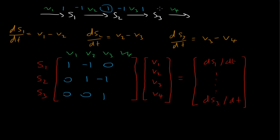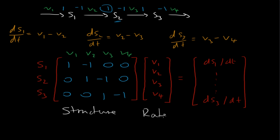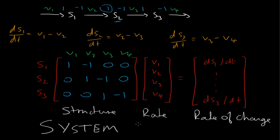Finally for V4, S1 is not involved so that's 0, S2 is not involved so that's 0, and S3 is involved with a stoichiometric coefficient of minus 1. So I've managed to separate what effectively amounts to the structure of the network, the rates, and the rates of change. This entire thing is often called the system equation.